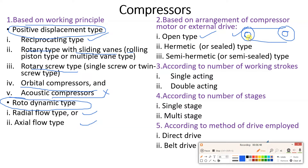In case of an open type reciprocating compressor, you can have single stage or multi-stage compression, and if multi-stage is there, we can have intercooling as well. So one cylinder with a piston reciprocating, discharge of the first cylinder goes through an intercooling arrangement and then to the inlet of the second compressor. Like this, in reciprocating compressors we can have multi-cylinder arrangements with or without intercooling.